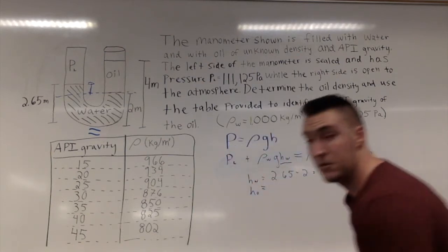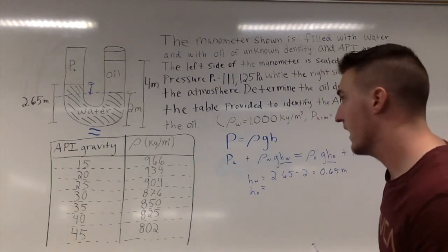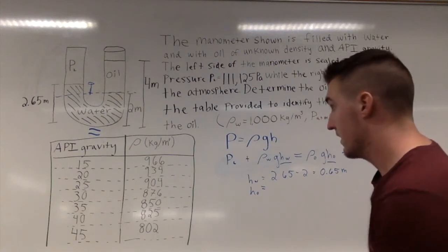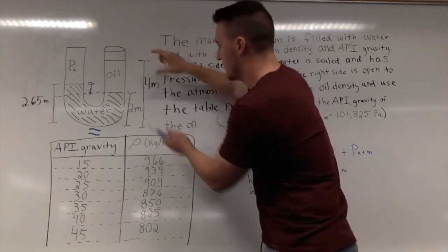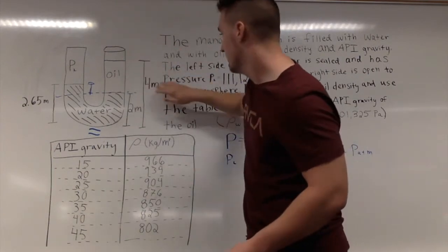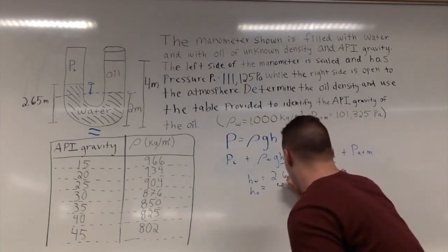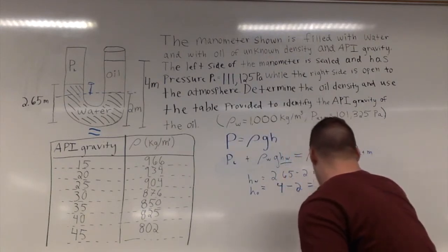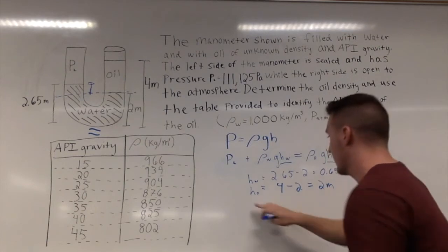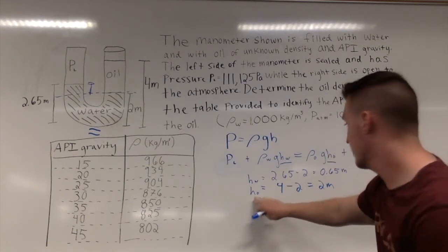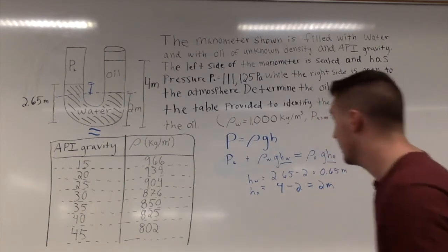Similarly, looking at the height of the oil, it's not going to be all this, just this particular section. So the 4 meters minus the 2 meters gives us a height of the oil column of 2 meters.